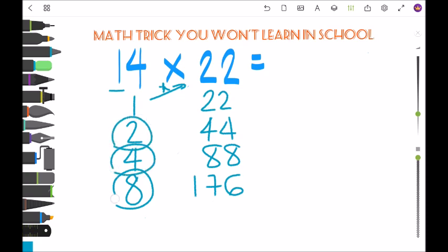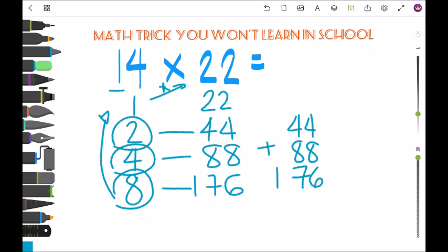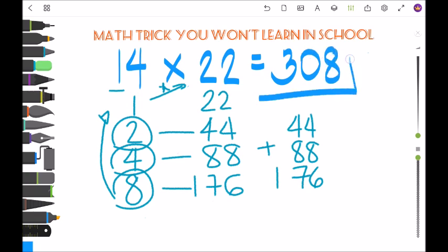So the opposite numbers: 44 plus 88 plus 176, so we have 308. That's the answer. Easy.